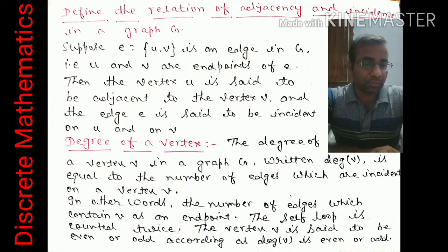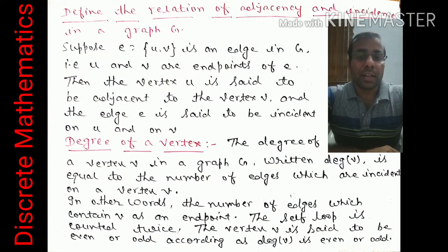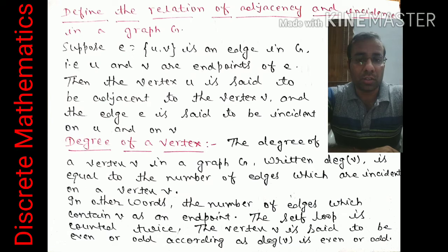A vertex v is said to be even or odd according to whether deg(v) is even or odd. This property is called the parity of the vertex. In some questions you may be asked to find the parity, which means determining whether each vertex's degree is even or odd.